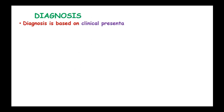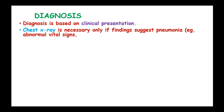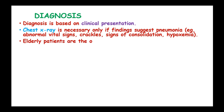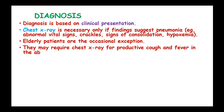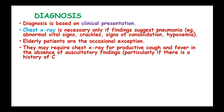Diagnosis is based on clinical presentation, and chest x-ray is necessary only if findings suggestive of pneumonia — such as abnormal vital signs, crackles, signs of consolidation, and hypoxemia — are present. Elderly patients are the occasional exception and may require chest x-ray for productive cough and fever in the absence of auscultatory findings, particularly if there is a history of COPD or another lung disorder.